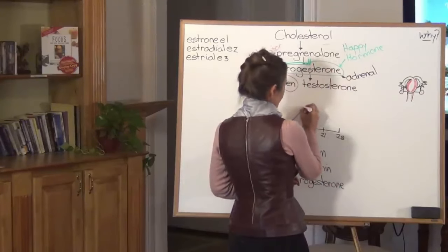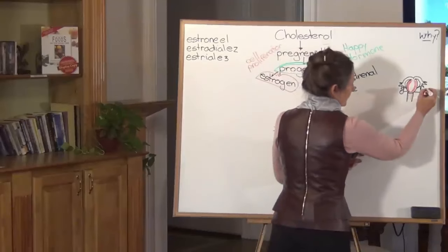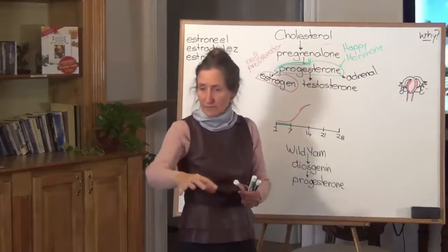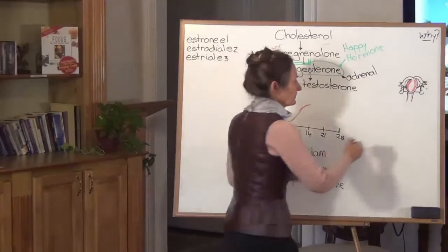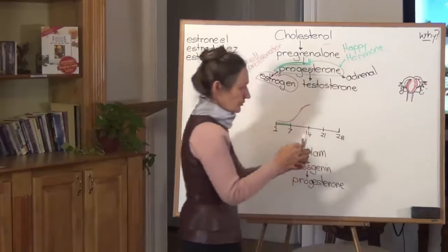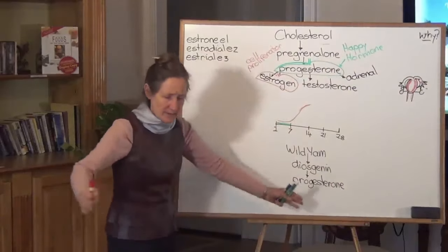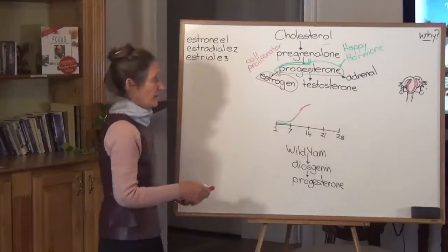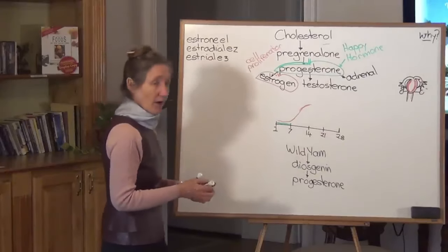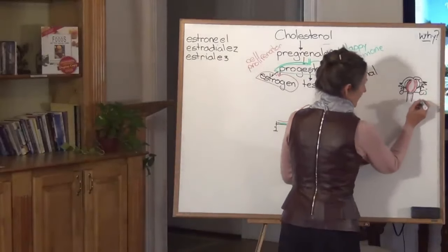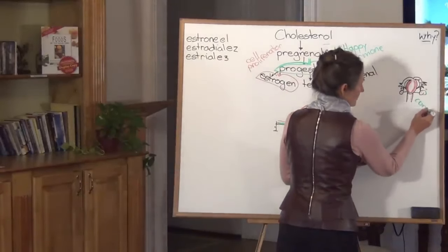Now by day 14 a fully developed egg bursts forth from the ovaries. Those little filaments on the end of the fallopian tube pull the egg up. So the egg comes up into the fallopian tubes. And the fallopian tube is ever moving basically like this, causing that egg to move up, up, up, up. Now the hole where the egg bursts forth develops a blister. And that blister is called the corpus luteum.